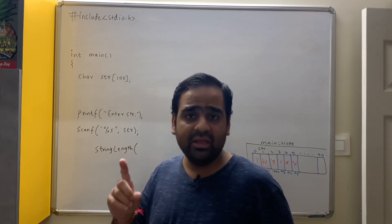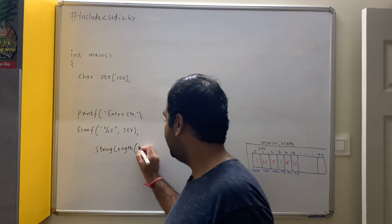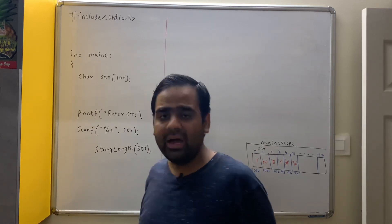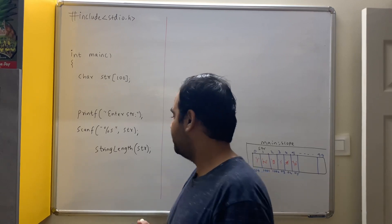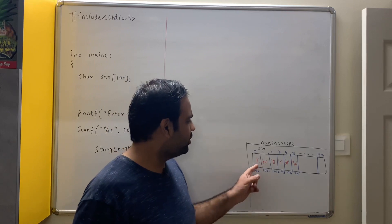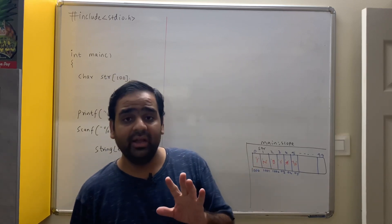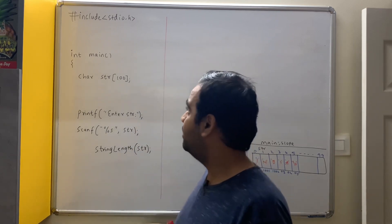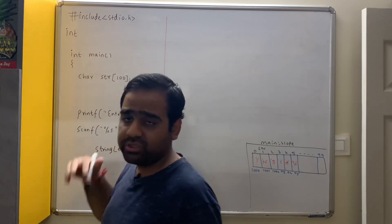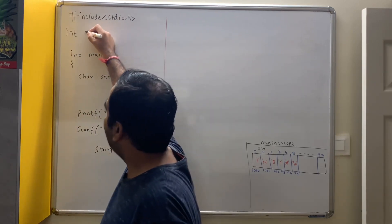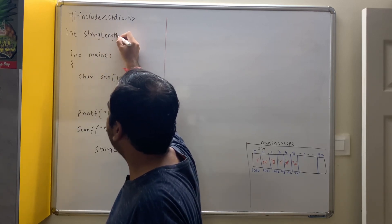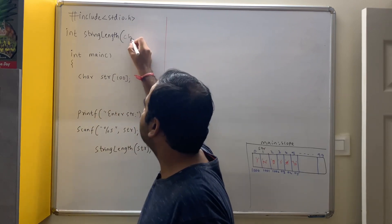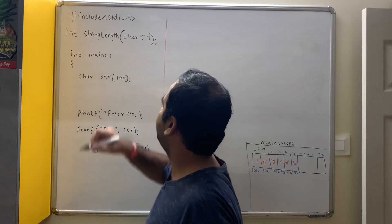Now, what is str? str is an array. Arrays are passed to functions by array name, and whenever arrays are passed, the base address gets passed, not the complete array. What should be the return type of string_length? The string length of India is 5 — an integer. So the function can return the answer as integer data type. The function name is string_length, and the first parameter str is a character one-dimensional array.